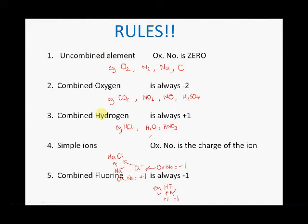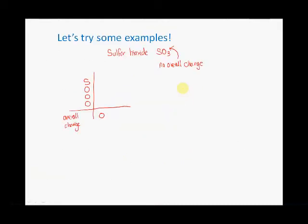Going back to our rules, combined oxygen in SO₃ is always negative two. So each of those three oxygen atoms will have an oxidation number of negative two: −2, −2, −2. We need an overall total of zero, so sulfur must be plus six, because plus six minus two minus two minus two equals zero. That's how we assign an oxidation number of plus six for sulfur in SO₃.